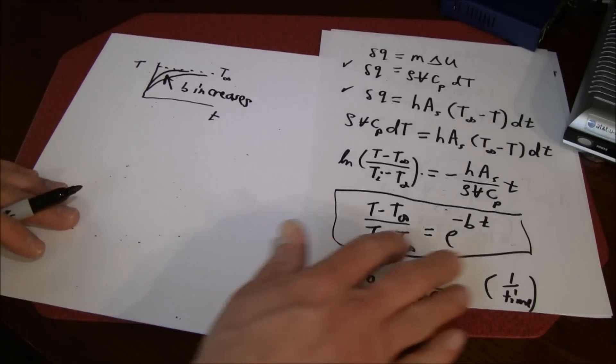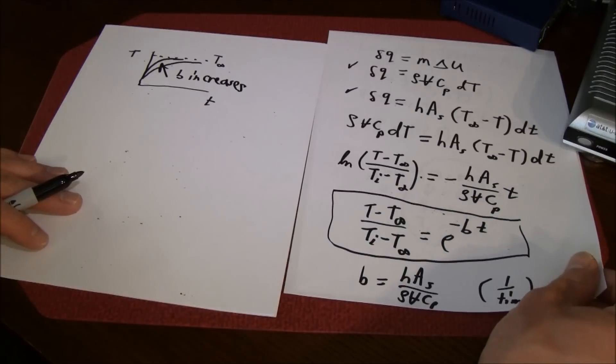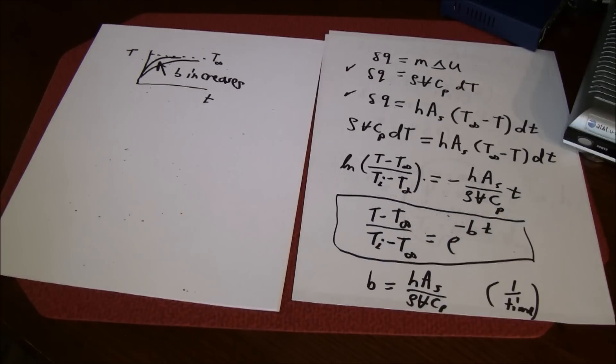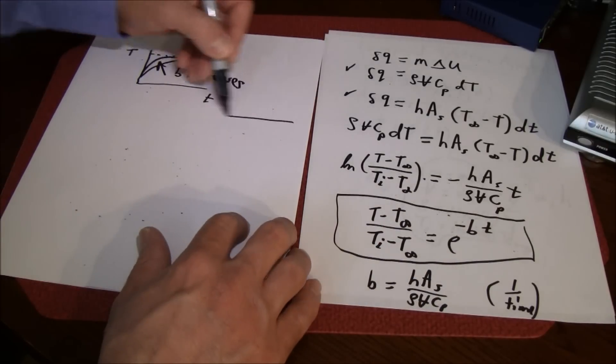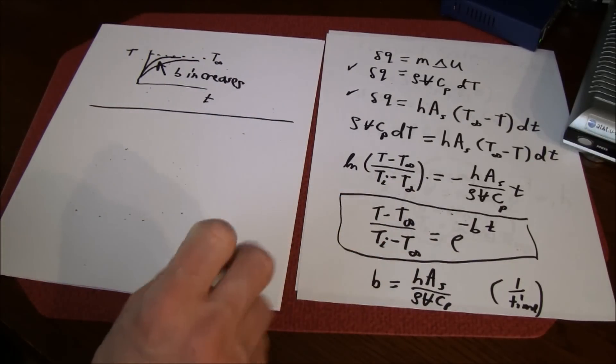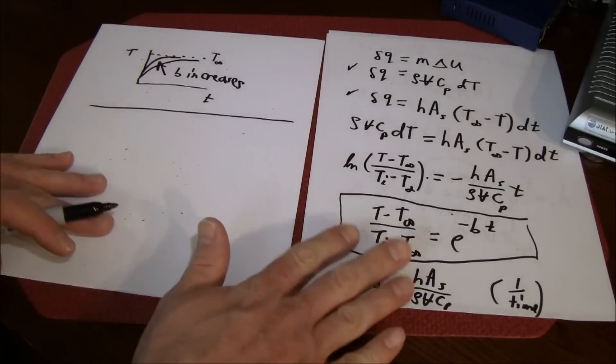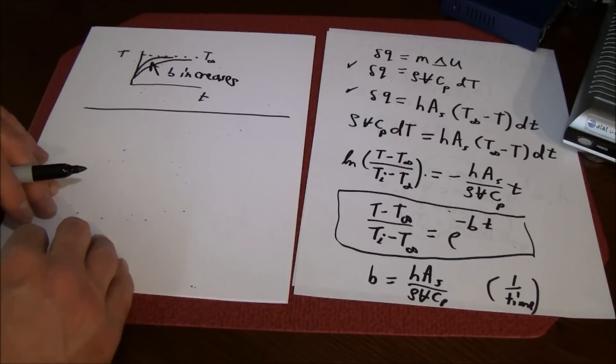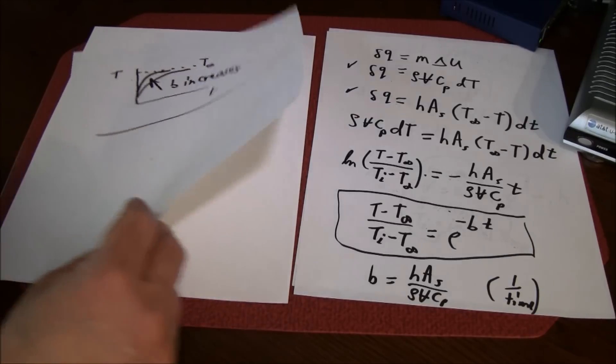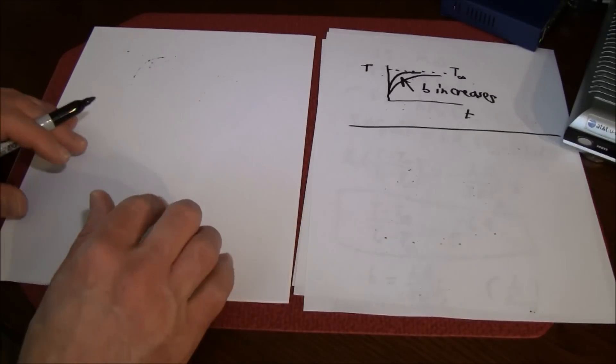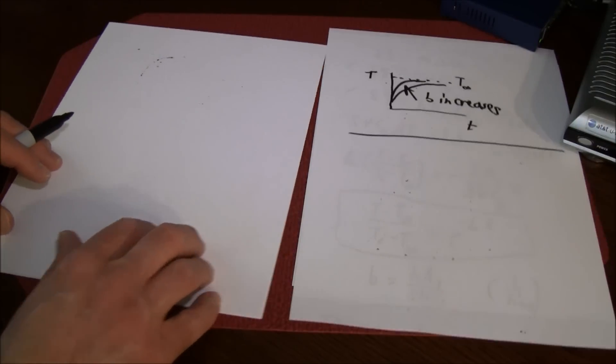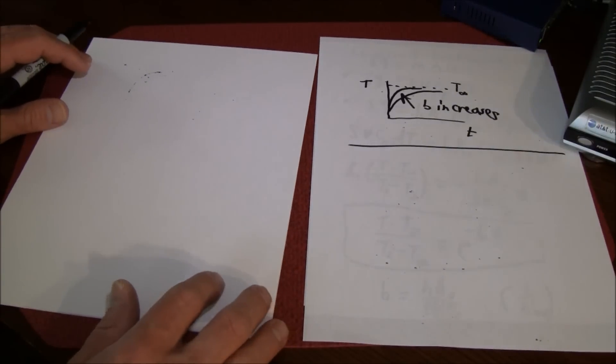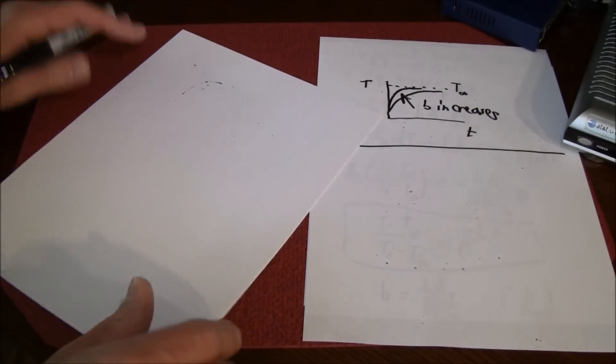So that is the lump system analysis. The thing we want to do here is look at the conditions when this problem is a good assumption, when it's a good assumption to assume that the temperature is uniform. So we'll just look at a plain wall, from the center line.